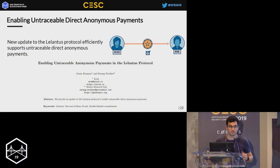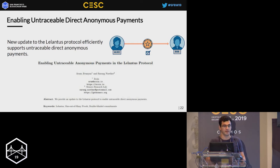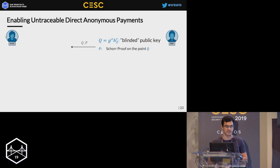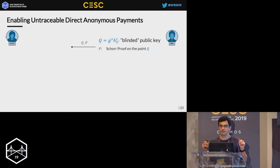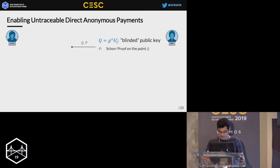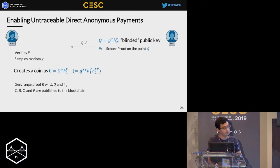With Sarang Noether from Monero Research Lab, we came to an efficient protocol enabling untraceable direct anonymous payments, which is still quite an intuitive design. Instead of engaging in regular Diffie-Hellman key exchange, Bob sends a blinded public key of the form G to the X, blinded by extra factors. Alice uses this public key to mint a new coin by generating a randomness Y and committing to the coin value with respect to these generators.